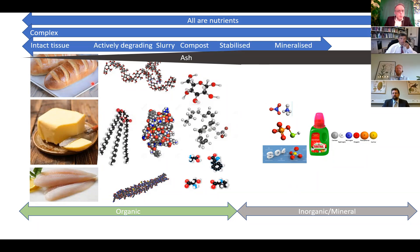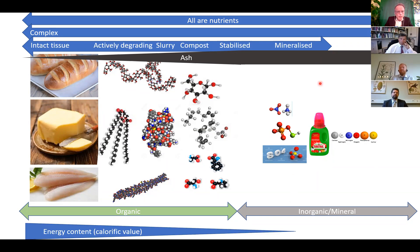If these organic materials degrade, the ash content will increase until it becomes inorganic or mineral. We can move all the way from intact tissue, via actively degrading material like slurries or compost, into a stabilized organic material. When it turns inorganic it's completely mineralized, and the energy content decreases all the way. The carbon and nitrogen at one end will be reduced, and at the other end oxidized.